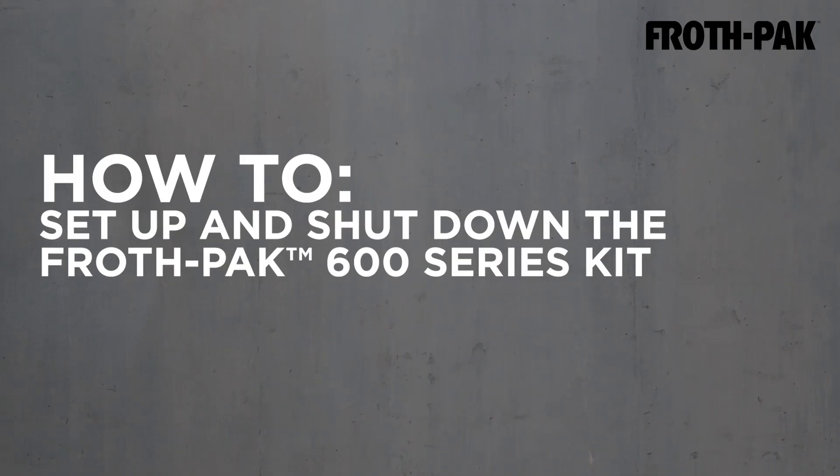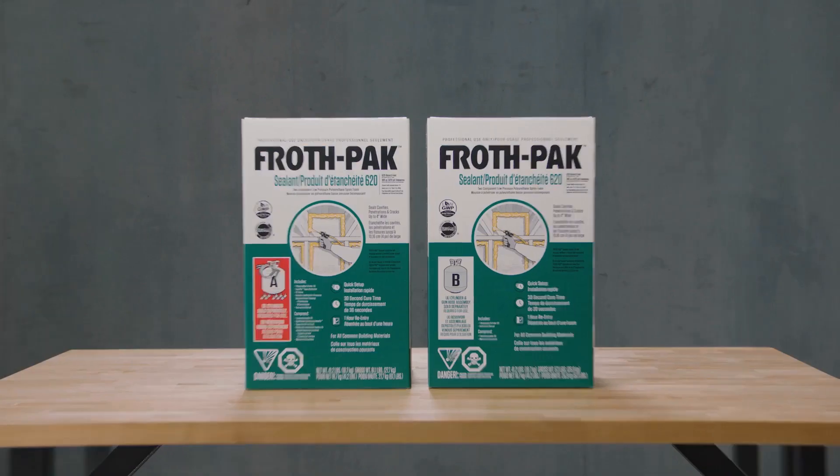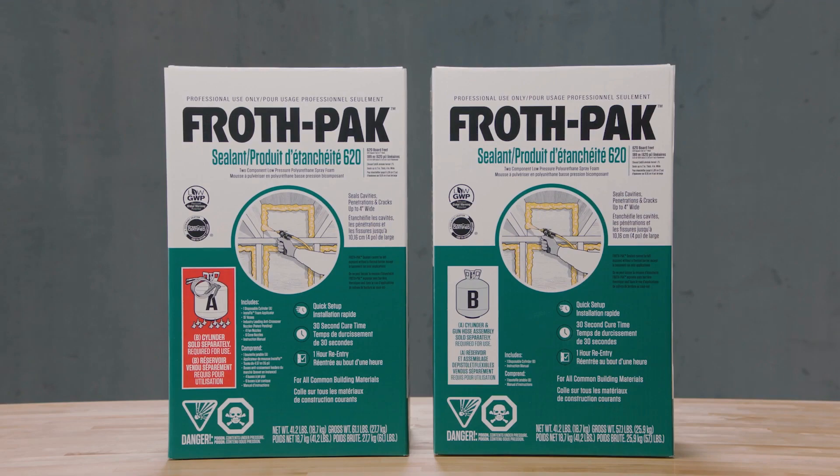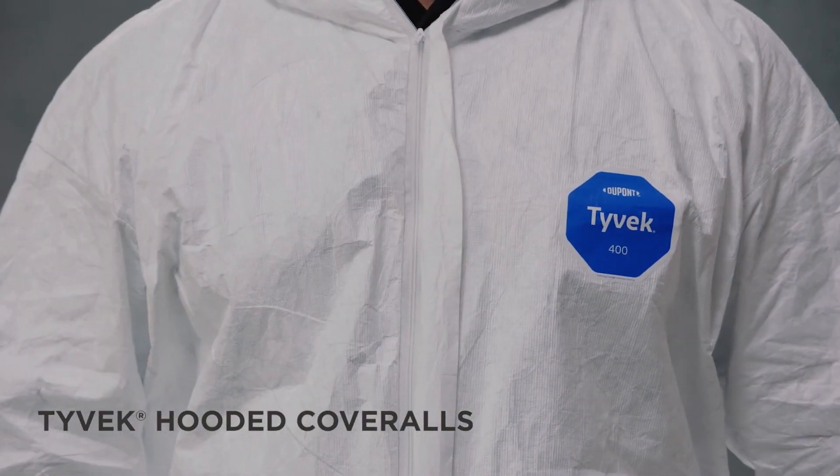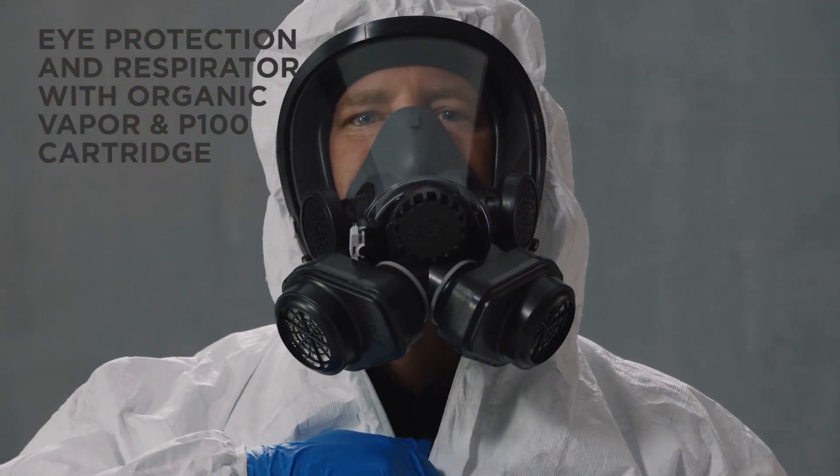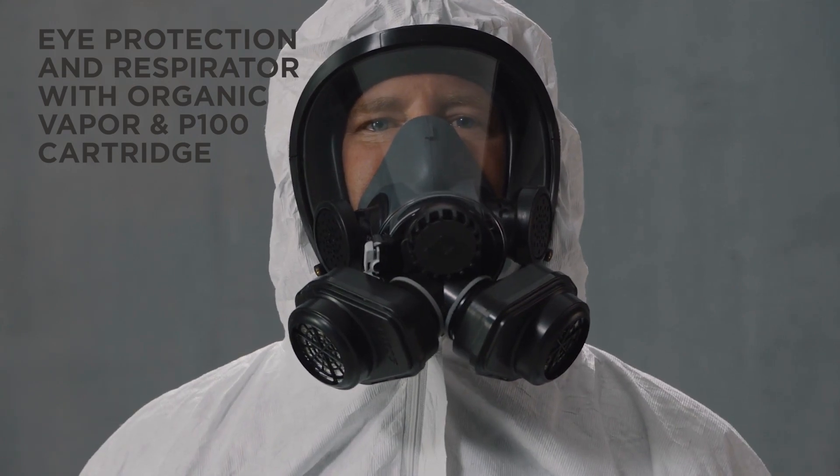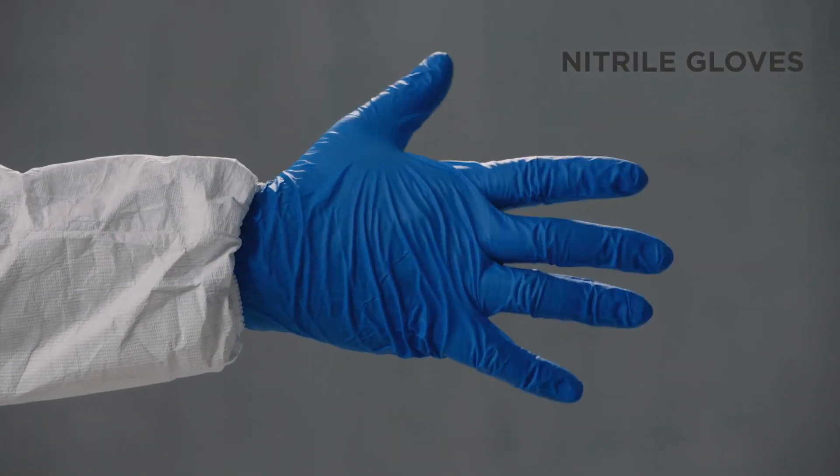How to professionally set up and shut down the FrothPac 600 series kit. You need the FrothPac spray foam 600 series, Tyvek hooded coveralls, eye protection and respirator with organic vapor and P100 cartridge, nitrile gloves, and a trash bin.